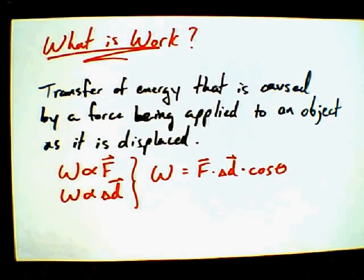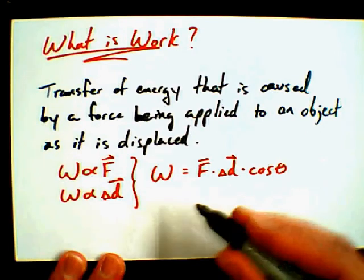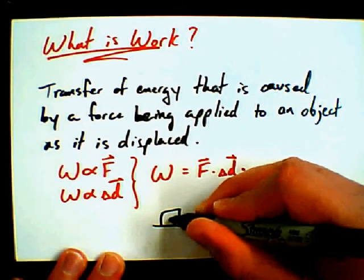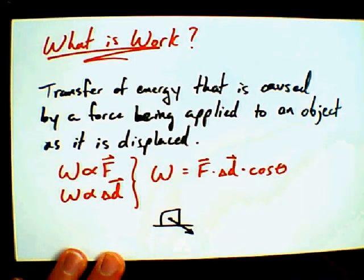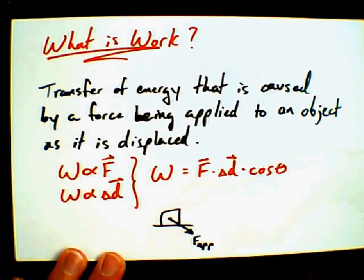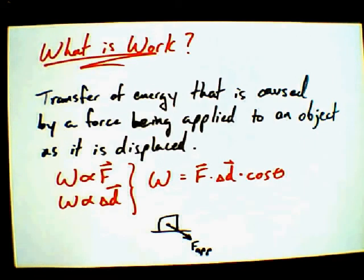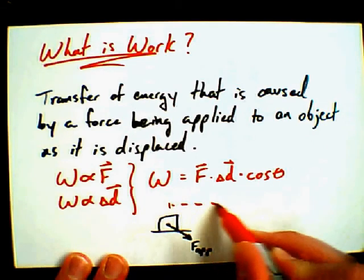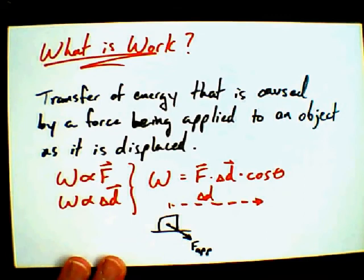It's worth talking about how we find work for a force applied to an object like a box sitting on the ground — something we covered in the previous unit. Maybe you apply a force that's down and at an angle on that object. The free body diagram might look something like this — you're applying a force at an angle. I'm not drawing in the normal force or gravity right now. The displacement might be delta-d off to the right.